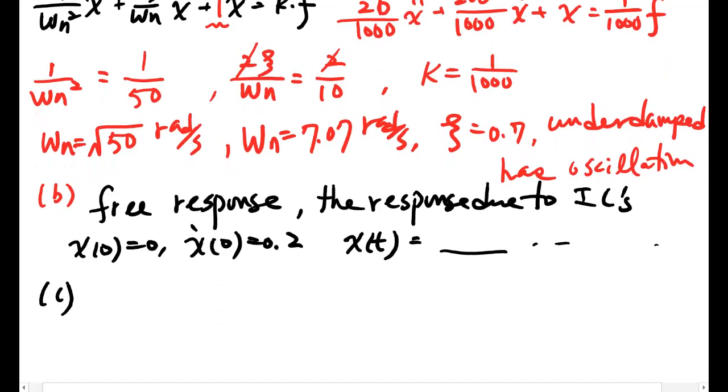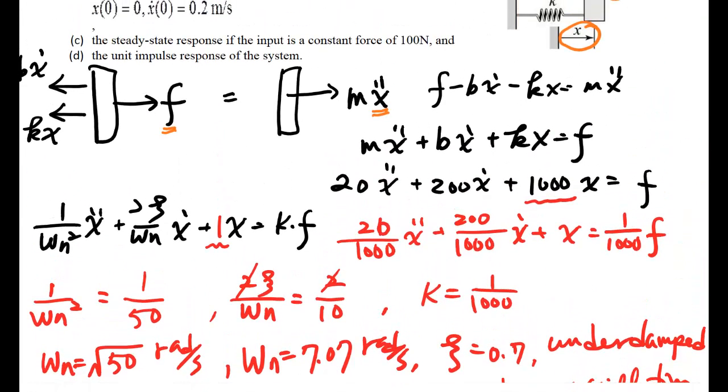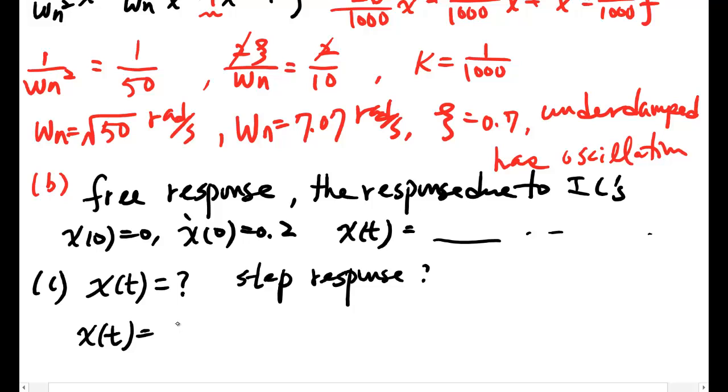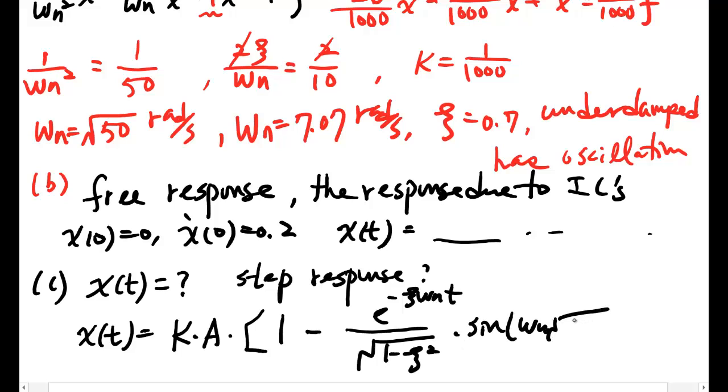Part C: What is the steady state response if the system has a constant force? First, what is x of t for the steady state response? Since it's underdamped, you can find this should equal KA. You can find it from the table or formula sheet. This is step response.